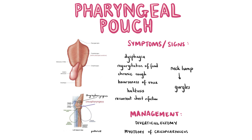This is quite a rare phenomenon and occurs more in males than females, typically in older people. Patients may complain of dysphagia, regurgitation of food, chronic cough, hoarseness of voice, halitosis due to food decaying within the pouch, and recurrent chest infections. On examination, you'll notice that a patient has a lump in the neck which gurgles on palpation. You may also note the halitosis.